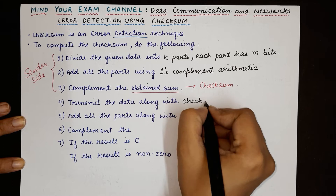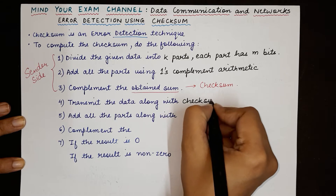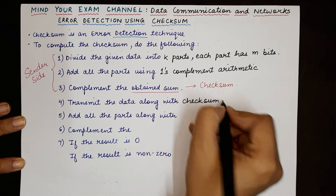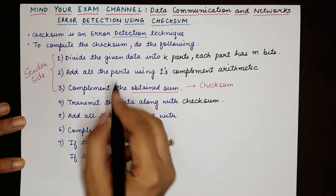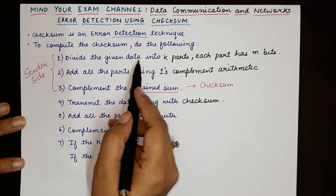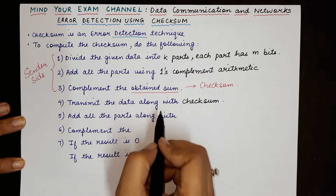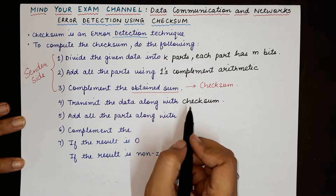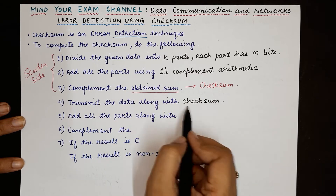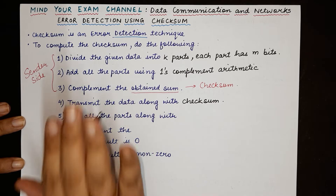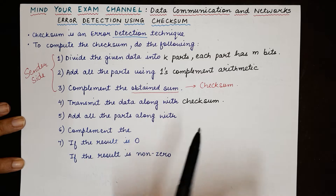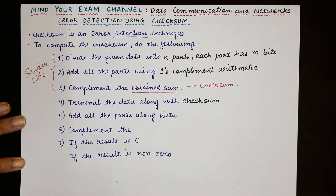The sender will not only transmit the entire original data but also transmit the checksum along with this data and send it to the receiver.